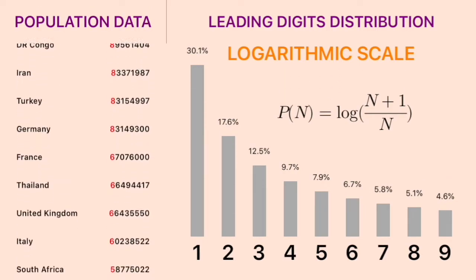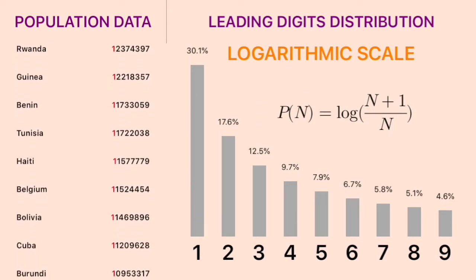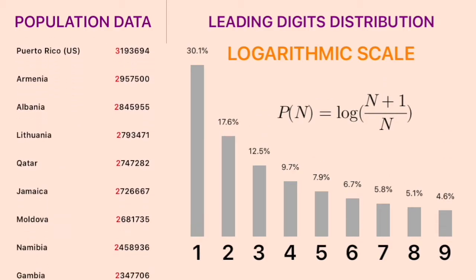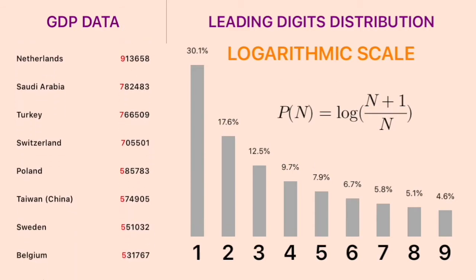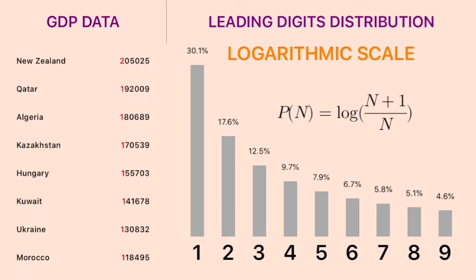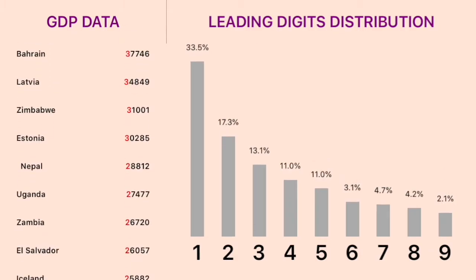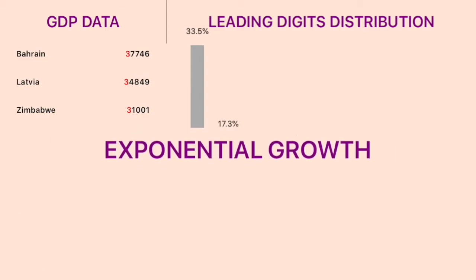Let's take the real world population data for example. Of 241 different countries and regions, 72 of them have a population number with the leading digit as one — that is a probability of 29.9%, which fits Benford's Law. Of 191 different countries and regions, 64 of them have a GDP number with the leading digit as one — a probability of 33.5%, which also fits Benford's Law.